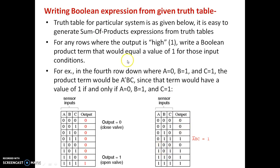If the value of output is 1, that means high, then we can generate a boolean expression in sum of product form by keeping the values of variables in such a manner that the output should appear as 1, as shown here in the fourth row.